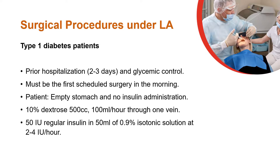For surgical procedures under local anesthesia in patients with type 1 diabetes, the patient must be hospitalized two to three days prior to the surgery to achieve glycemic control. The surgery must be the first scheduled surgery in the morning. The patient must arrive on an empty stomach and no insulin should be administered. During the procedure, 10% dextrose 500 cc at 100 mL per hour is administered through one vein, and 50 international units of regular insulin in 50 mL of 0.9% isotonic solution at 2 to 4 international units per hour must be administered through the other vein, based on the patient's plasma glucose level.